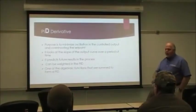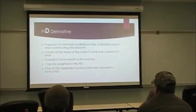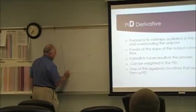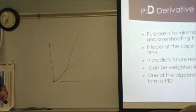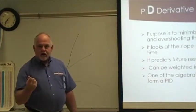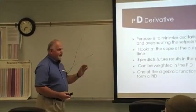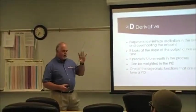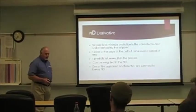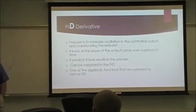The D is to minimize the oscillations. It looks at the slope of the curve. If we have a function of an algebraic curve that is proportional directly, it looks at the slope of the curve and sees what the curve's doing. If the slope is getting further away from where it's supposed to be, it takes action — basically drives the valve open more. The main function of the D portion is to prevent oscillations in curves. It kind of predicts the future. And again, it can be weighted as part of the PID, with more or less authority than the others, and it's also part of that summation of the algebraic function.